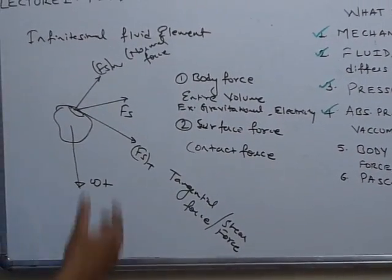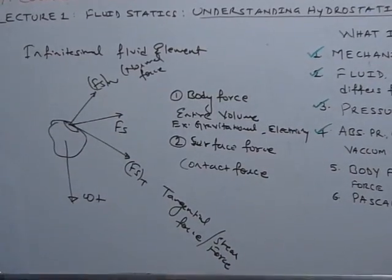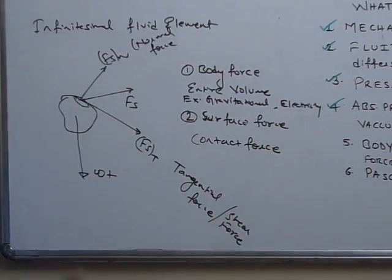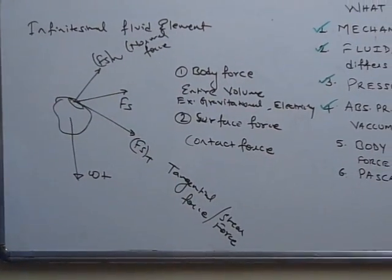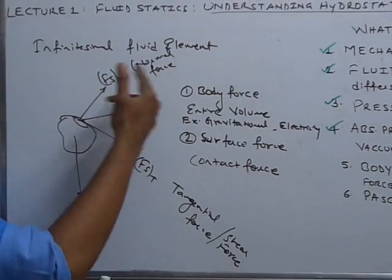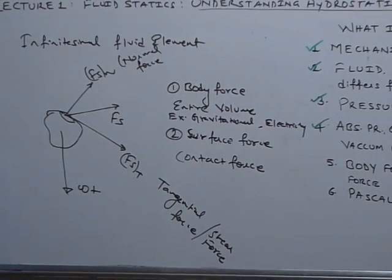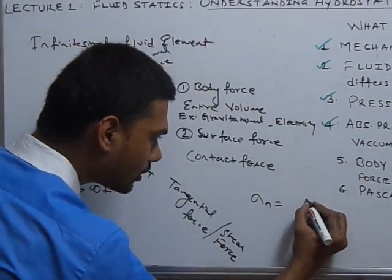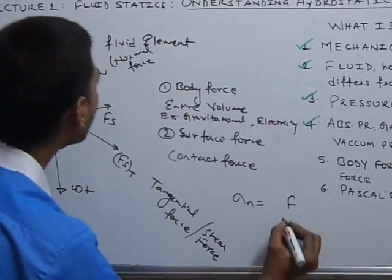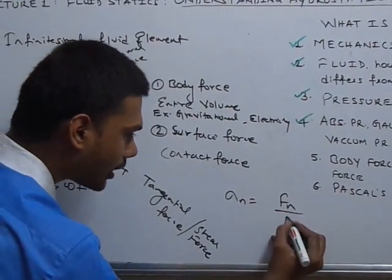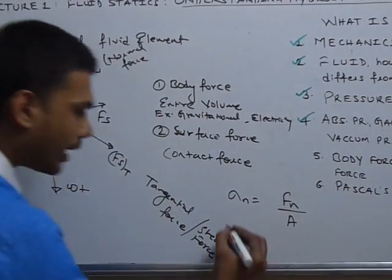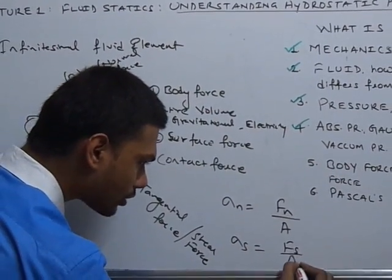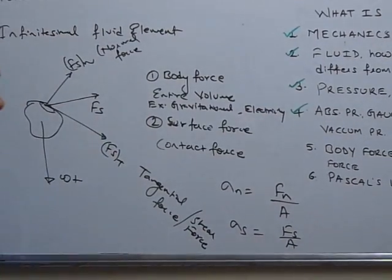When the normal force or the tangential force is divided by the area over which they are acting, it gives rise to normal stress and shear stress. Normal stress is the normal force Fn divided by the area, and shear stress is the shear force divided by the area.